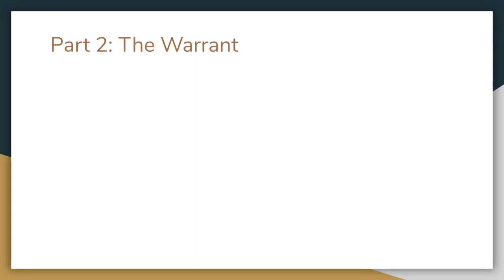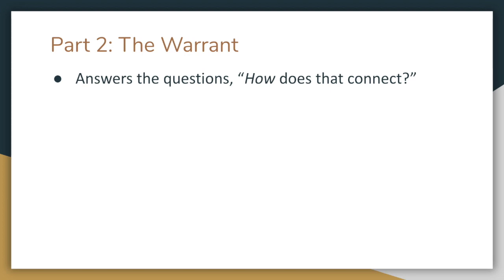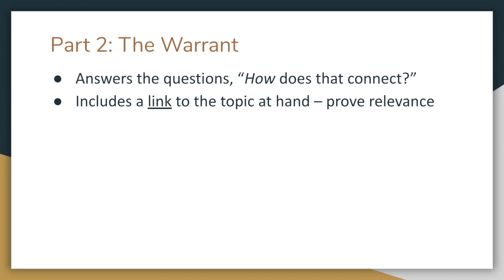Part two: the warrant. This is where you start explaining why your claim matters. And this is the part of a Claim-Warrant-Impact argument that is most commonly misunderstood. The warrant answers the question: how does that connect? It includes a link to the topic at hand — so you're asking, how does this claim matter in the debate? How does it connect to the resolution we're talking about? What kind of impact might it have on the debate?